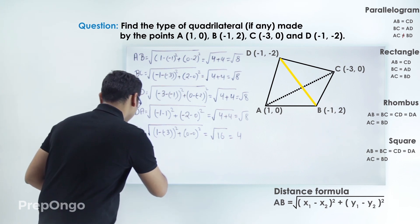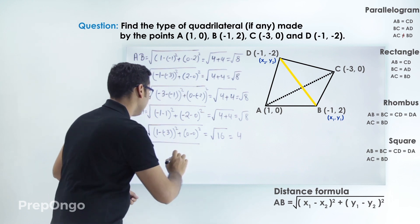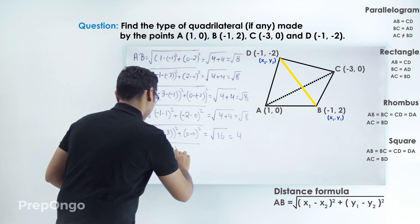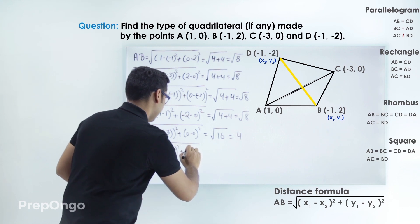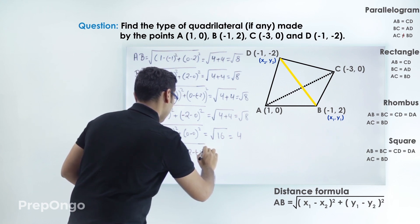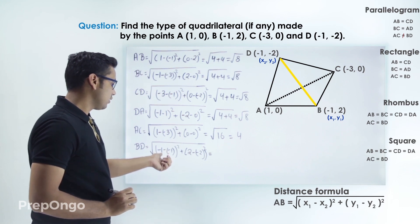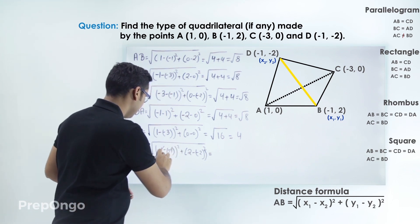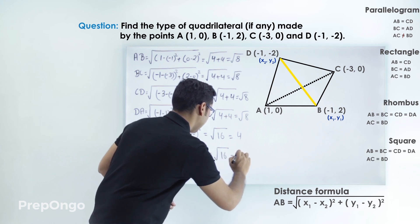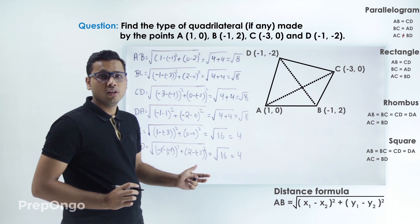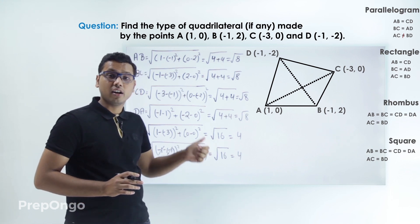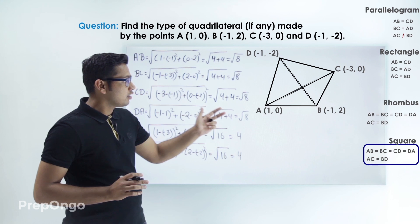Now let's find the length of diagonal BD. Applying the distance formula and putting the values: (minus 1 minus minus 1) squared plus (2 minus minus 2) squared. Here minus 1 and minus 1 cancel out giving 0, and 2 plus 2 is 4, so this gives root 16, and the diagonal BD is also coming out to be 4. Since all four side lengths are equal and the diagonal lengths are also equal, we can say that this quadrilateral is a square.